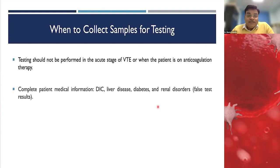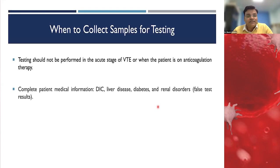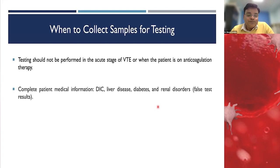When should we collect samples? Testing should not be performed in the acute stage of thrombosis or when the patient is on anticoagulant therapy, because consumption of proteins or elevation of other factors can give false positive or false negative results. We should also take a good medical history inquiring about DIC, liver dysfunction, or renal dysfunction, as these conditions cause false results — DIC consumes most factors, liver disease reduces synthesis of protein C and other liver-produced proteins.